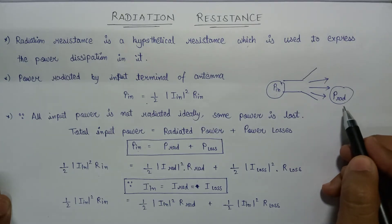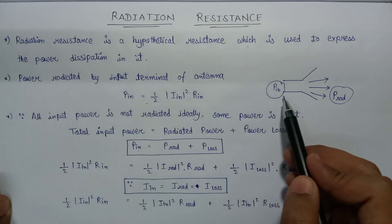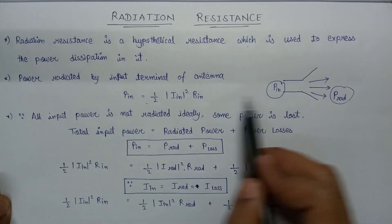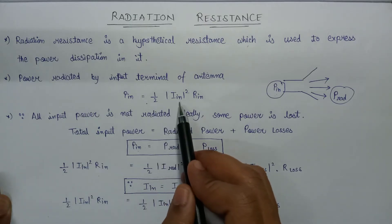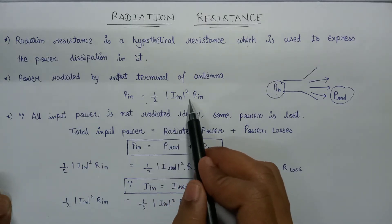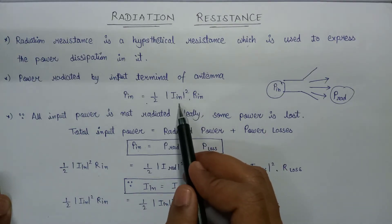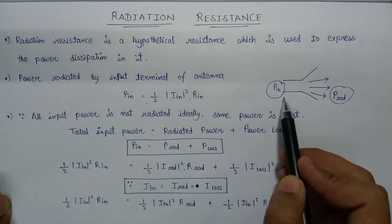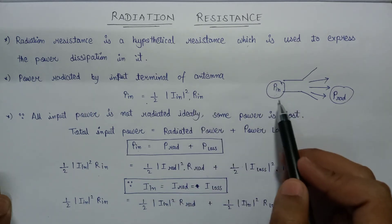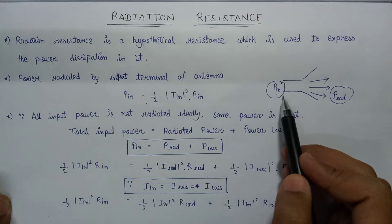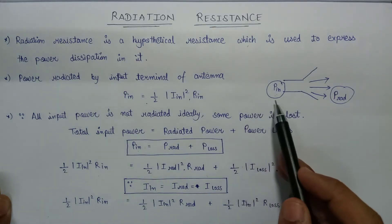If we write down the expression for P_input, the input power supplied to an antenna, it will be equal to half times the magnitude of I_input squared, multiplied by R_input. Here, I_input is the input current supplied to the antenna and R_input is the input resistance at the input terminal of the antenna.